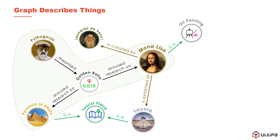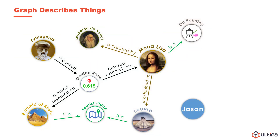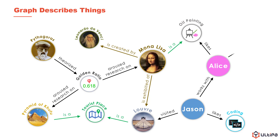Now we've got a graph formed by part of the discussion and your thoughts stimulated. This graph can be expanded. Maybe you have a friend named Jason, who also visited the Louvre and takes coding as a hobby. Maybe he has a colleague named Alice, who likes oil painting and live broadcasting.